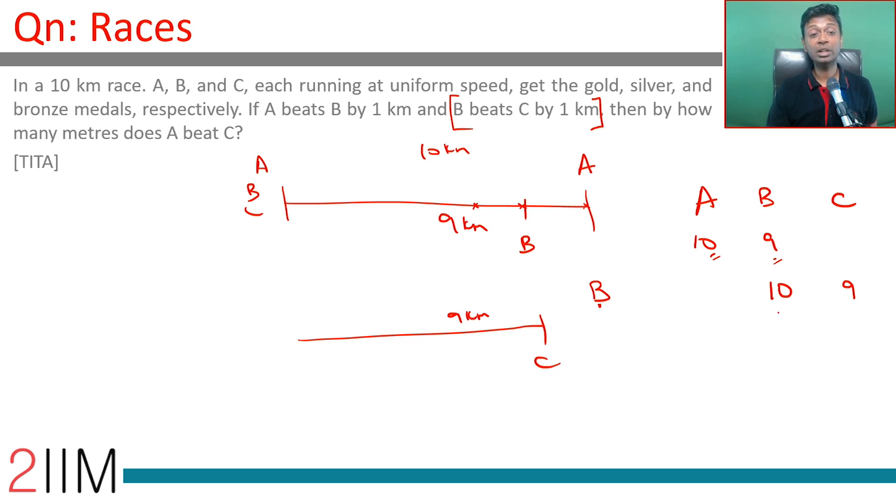Then by how many meters does A beat C? That means when A is finishing, how much has C done? When B does 10 kilometers, C does 9. When B does 9 kilometers, C will do 9 × 9/10 which is 8.1. When A does 10 kilometers, C does 8.1 kilometers, or C lags behind by 1.9 kilometers.